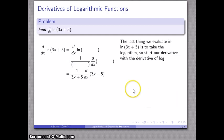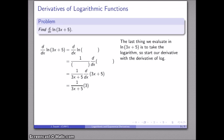Now I need to find the derivative of 3x plus 5, which is just going to be 3. And there's my derivative, which we can simplify a little bit — and there's my great simplification.